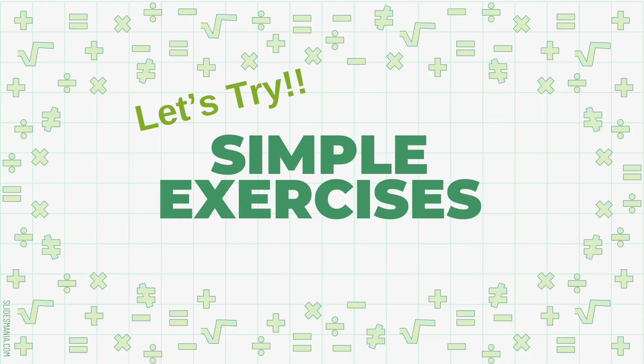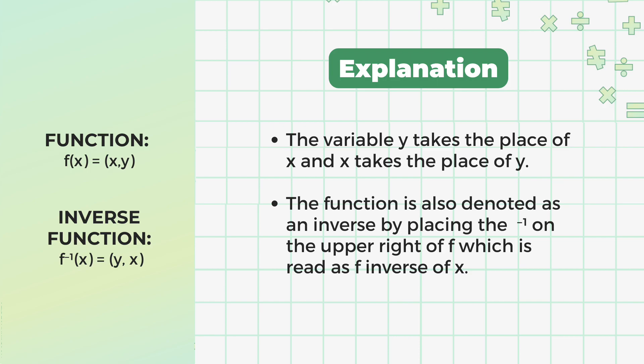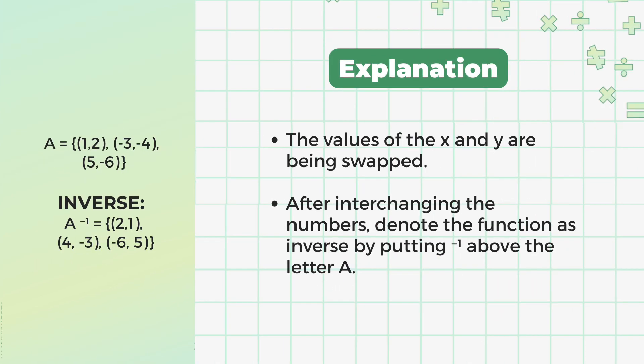Let's try some simple exercises to get an idea of what an inverse function is. As you can see, the position of x and y are interchanged. The variable y takes the place of x and x takes the place of y. The function is also denoted as an inverse by placing the exponent of negative 1 on the upper right of f, which is read as f inverse of x. The same steps from the previous example are being followed on this one, and the values of x and y are being swapped.